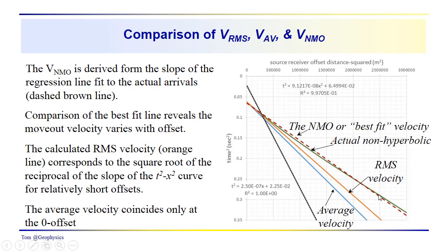If we were only looking at the long offsets, the actual moveout would be, we'd have a smaller slope here than we do from the best fit line, so we'd have a larger velocity. So smaller velocity, larger velocity, the velocities that you get depends upon the range of the offsets.